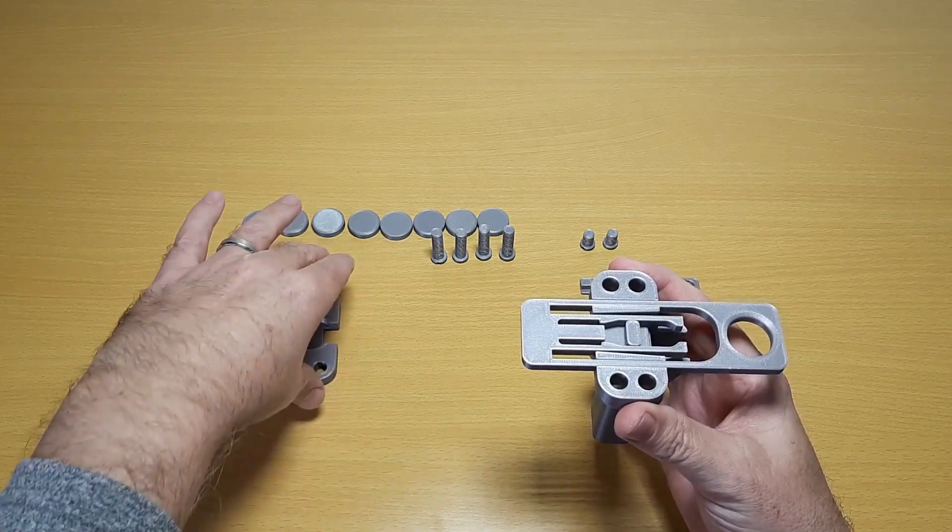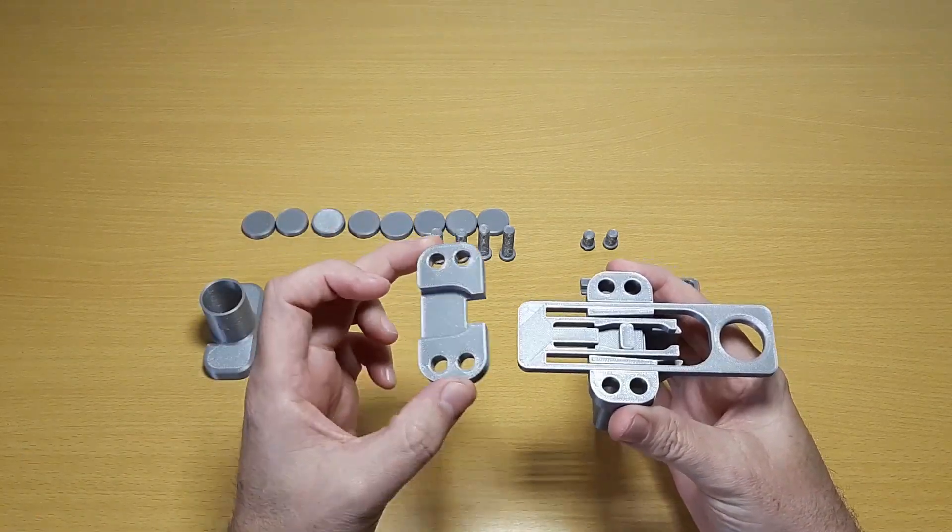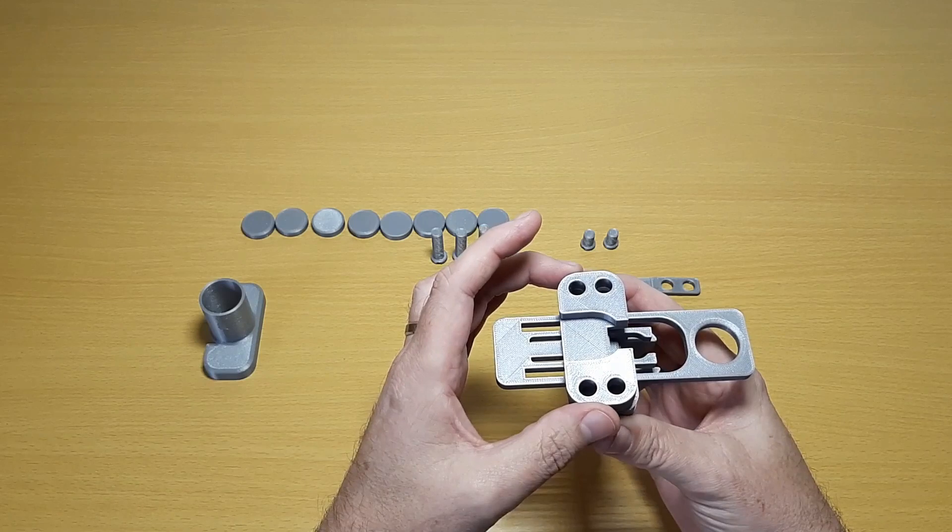For the next piece, do the same as before. Line up the cutout with the slot in the handle.